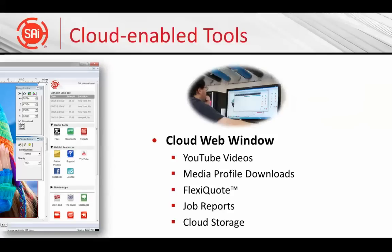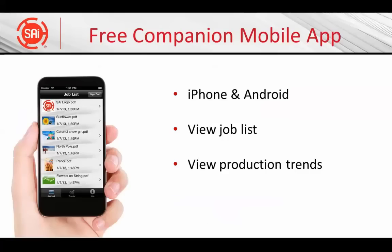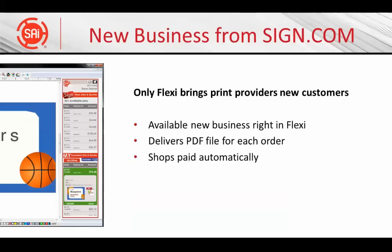The Flexi Cloud window offers cloud-enabled business tools like FlexiQuote and Cloud Storage, as well as quick links to tutorials on YouTube and social media sites. If you've ever wanted to check in on the shop while you're on the road, now you can, with the new SAI Cloud mobile app for iPhone and Android smartphones. View production information and monthly or annual trends from anywhere in the world. Flexi, in partnership with the International Sign-in Printmakers Guild, now brings new business from Sign.com directly through the Flexi Cloud window. Sign.com is an e-commerce site where the sign-buying public can easily order custom signs or banners. All orders are routed to local guild members for fulfillment. Click the link to watch a video tutorial.